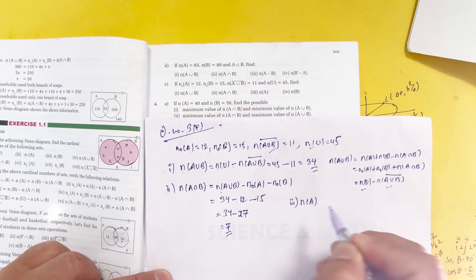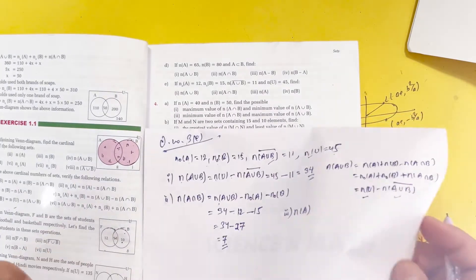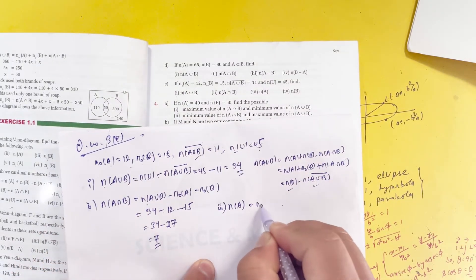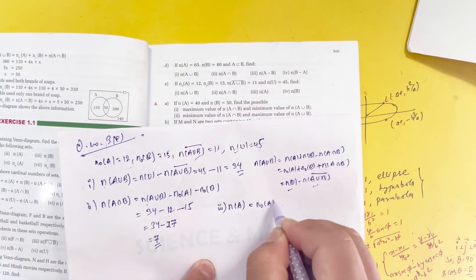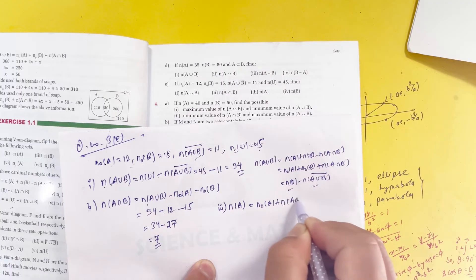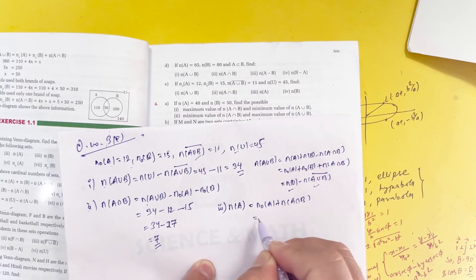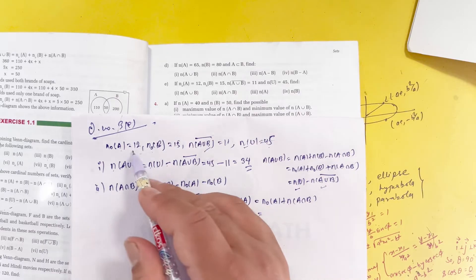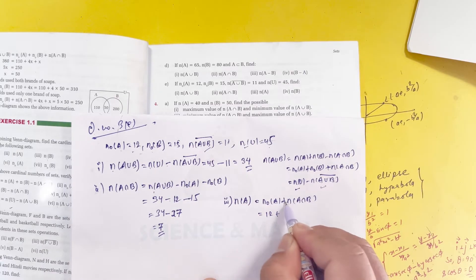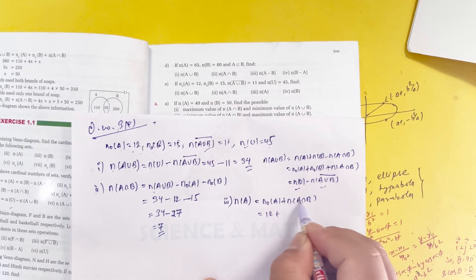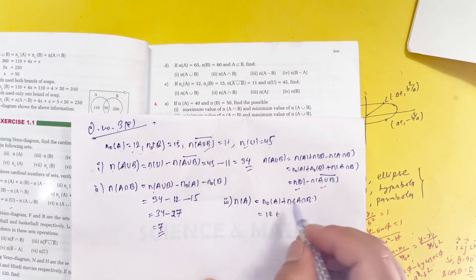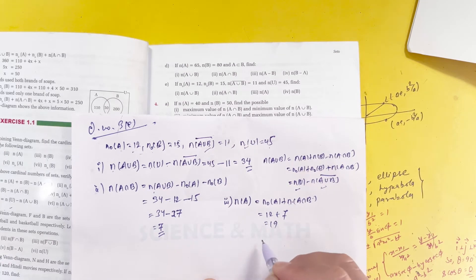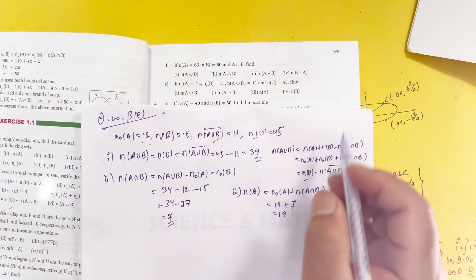The formula is n(A) equals n(only A) plus n(A intersection B), so n(A intersection B) equals n(A union B) minus n(only A) minus n(only B). Looking at this, n(A intersection B) equals 34 minus 12 minus 15, which gives the answer.